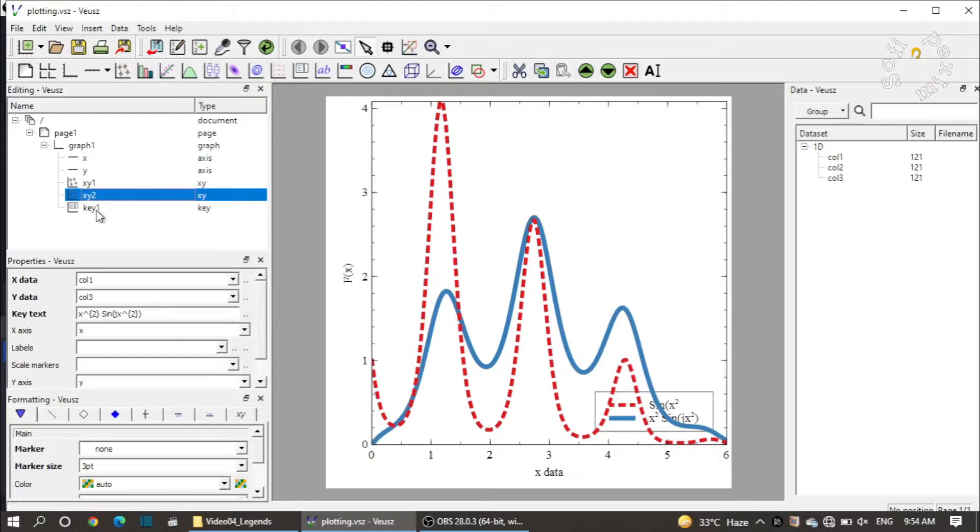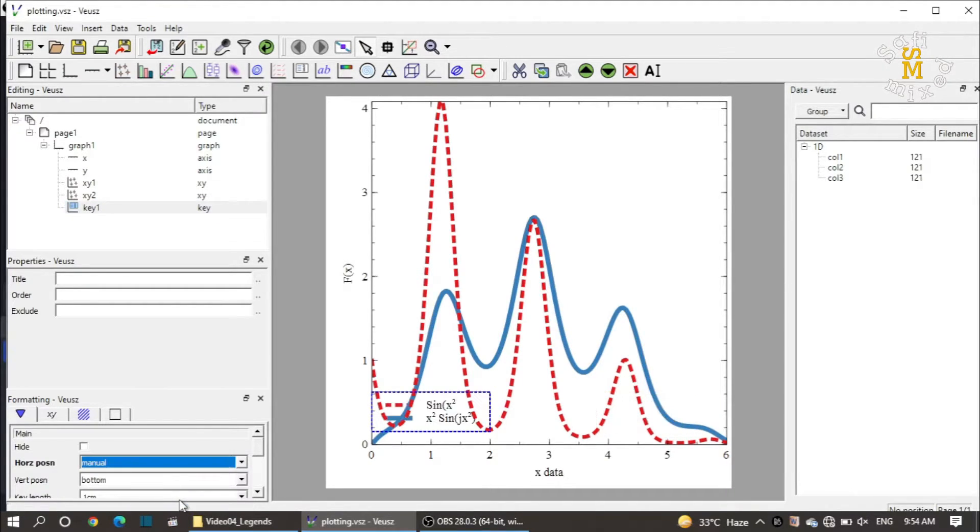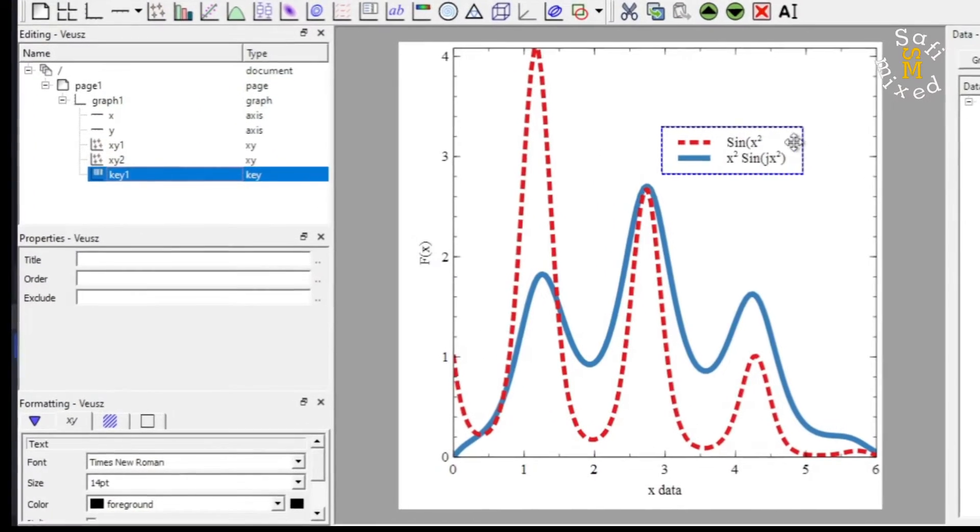Now I click on the key gadget and come to the formatting window. You see here the position is right in bottom, and I want to put this on manual. If I put this on manual, I would be able to change the position as per my own choice, and I want to put this right over here.